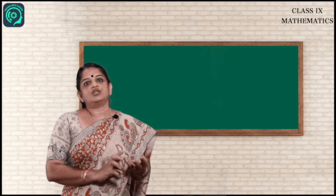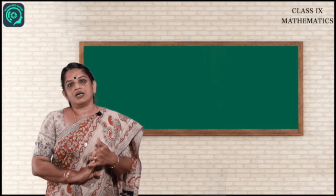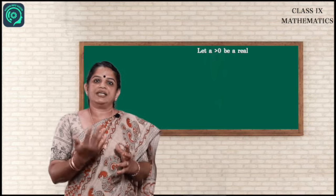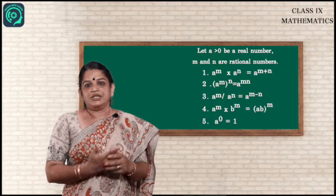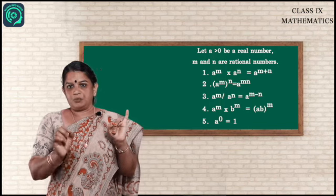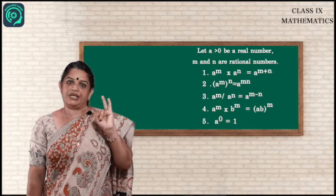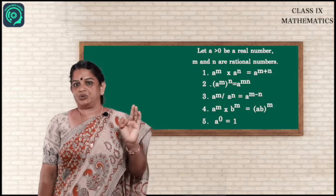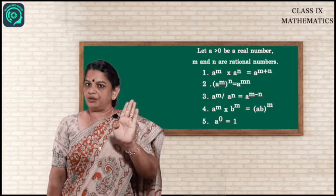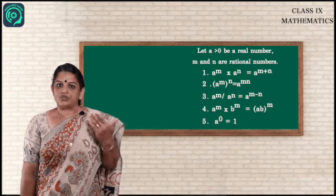Next, the laws of exponents on real numbers — the same laws of indices studied in 7th and 8th standard. Let a > 0 be a real number and m, n be rational numbers. The laws are: (1) a^m × a^n = a^(m+n); (2) (a^m)^n = a^(mn); (3) a^m ÷ a^n = a^(m−n); (4) a^m × b^m = (ab)^m; (5) a^0 = 1. The base must be the same when applying these laws.